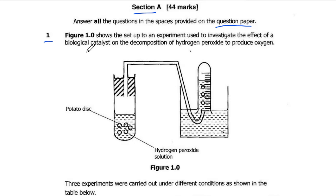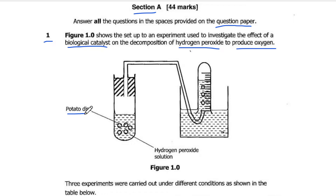Figure 1.0 shows an experiment used to investigate the effect of a biological catalyst on the decomposition of hydrogen peroxide to produce oxygen. We have the setup of the experiment here. We have a test tube containing potato discs and hydrogen peroxide, then a delivery tube connecting to a collecting boiling tube or gas jar where we are collecting our oxygen.